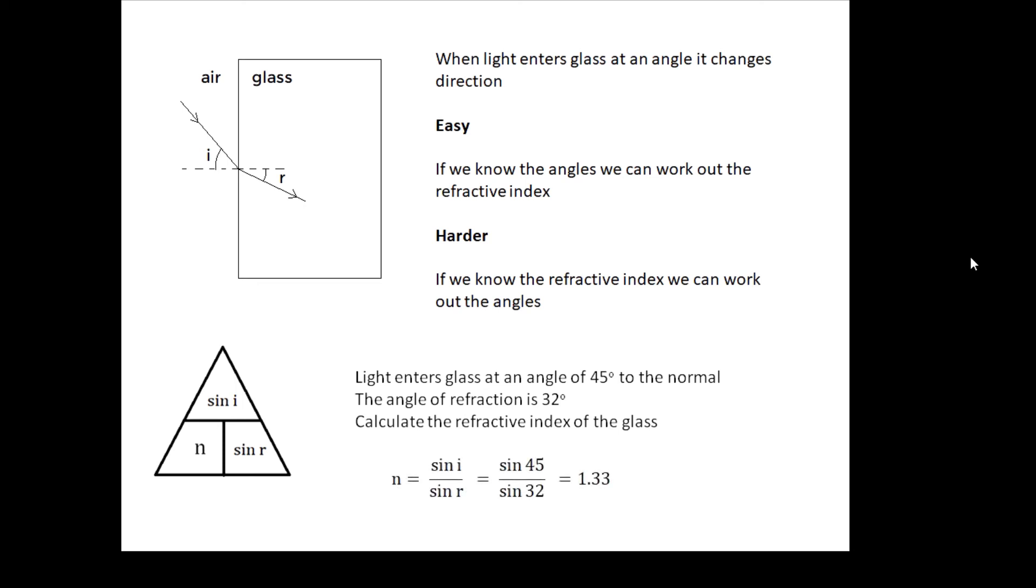Sin i over sin r, sin 45 over sin 32 is 1.33. It's bigger than one and it has no units, so I'm happy.